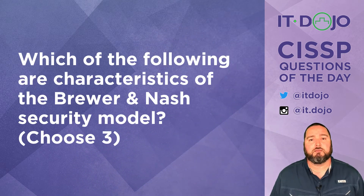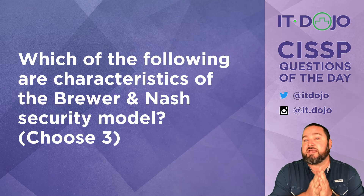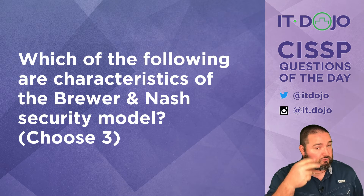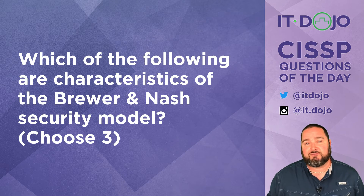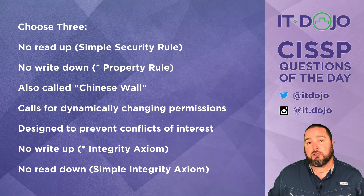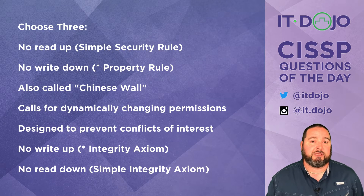Hey, what's going on CISSP wannabes, welcome back. These are the IT Dojo CISSP practice questions of the day. I'm Colin Weaver, and every single day I'm going to ask you two questions to help you as you continue your CISSP studies. My first question today: which of these — pick three — are characteristics of the information security model we call Brewer and Nash? Give those a read, then click play and we can talk it through.